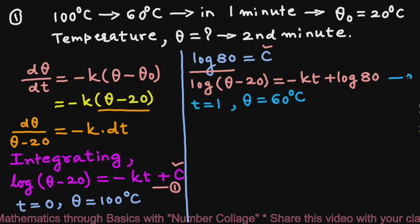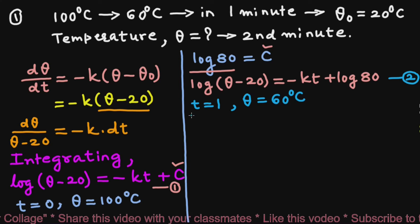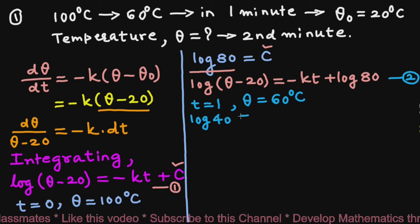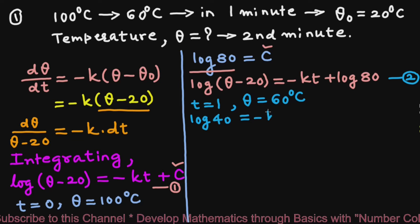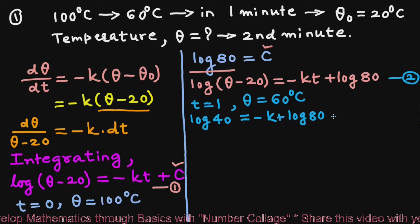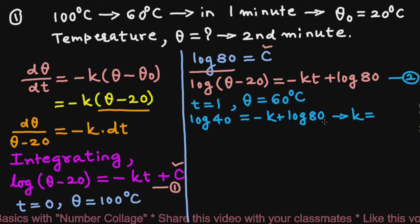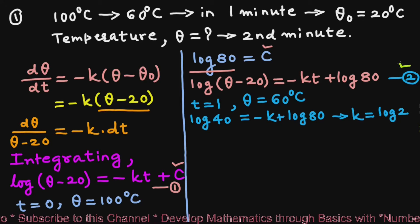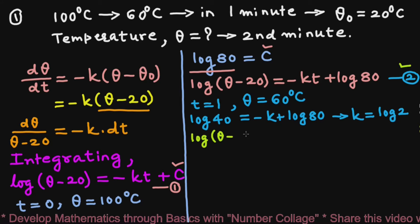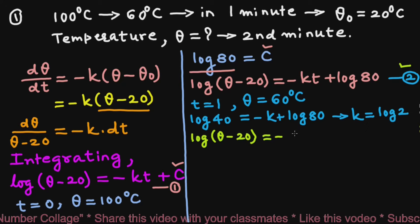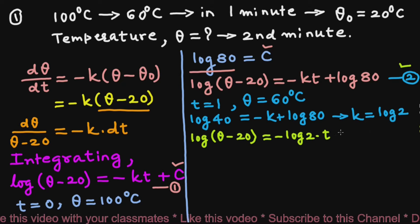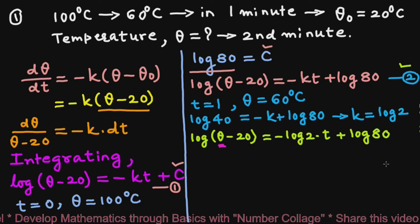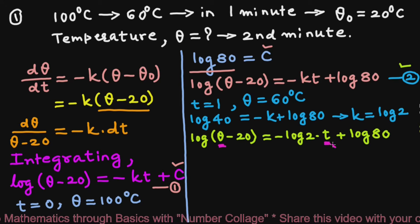Therefore, the equation becomes log(60 − 20) = log 40 = −k + log 80. This gives us k = log 80 − log 40 = log 2. So the equation becomes log(θ − 20) = −log 2 · t + log 80. We have to find θ when t = 2 minutes.